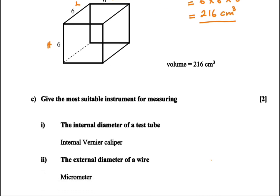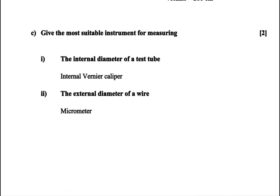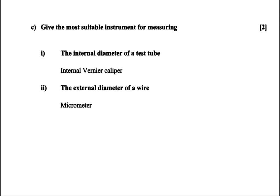Then we go to part C. Part C says give the most suitable instrument for measuring the internal diameter of a test tube. The internal diameter of a test tube. Let's say we have a test tube like this. There's a test tube. And we want to measure the internal diameter. That would be the diameter, and that would be the internal diameter.